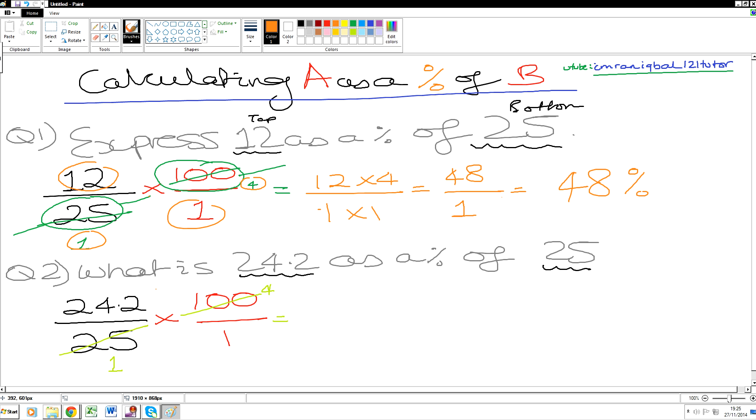The two top numbers times together: 24.2 times by 4, over what's on the bottom - 1 times by 1, which is 1.